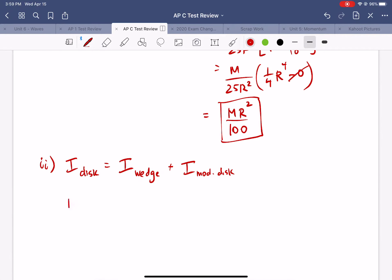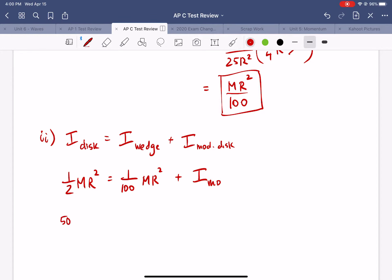We know the moment of inertia of the complete disk is 1/2 MR². The moment of inertia of the wedge we just found was 1/100 MR² and then this term here is what we are trying to find. All right so this is just a simple subtraction. One half minus one one hundredth is 50 minus one over 100. So we get 49/100 MR² as our final value.